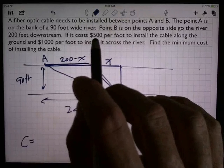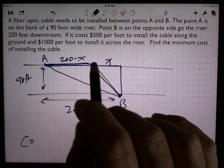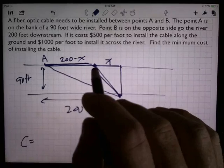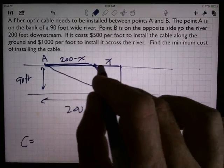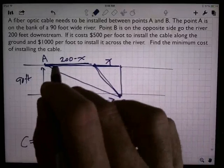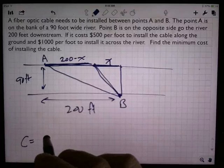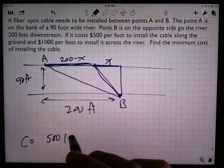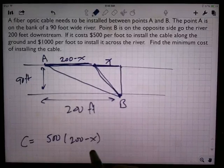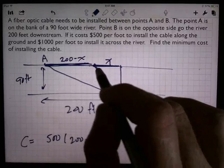Now the cost is given to me in $500 per foot. So if I can figure out how long that is, then I can get the cost. Actually, I can see how long that is. That's 200 minus X. So if X is this distance right here, then 200 minus X is the distance that I'm going to move along the riverbank there. So $500 per foot times 200 minus X feet. Well, that's going to be the cost of the fiber optic cable along the edge there.